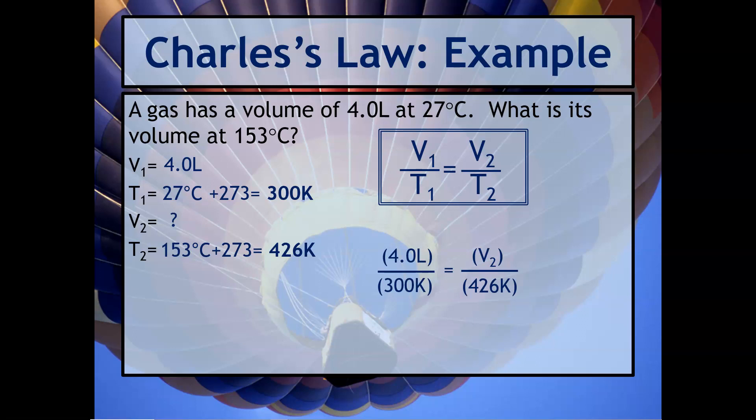To solve this algebraically, you could do some cross multiplication, so you multiply diagonally. Some students like to simplify the four liters over 300 Kelvin, so do that division and then multiply by 426 Kelvin. It's really up to you. But if you do this correctly, you should get a volume of 5.7 liters. I of course always recommend that you try it to make sure that you know how to use your calculator. You should get 5.7 liters at the end of this.